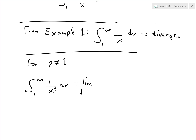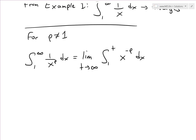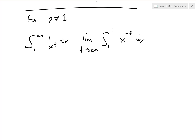We write it as the limit as t approaches infinity of the integral from 1 to t of x to the power of negative p. Writing it as x to the negative p is just easier to apply the integral — 1 over x to the p is the same thing, just flip it and put a negative on the power. So we have that, and now we evaluate.